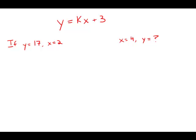We're given the equation y equals kx plus 3, and we're told in the equation k is a constant. If y equals 17, x equals 2, what is the value of y when x equals 4?